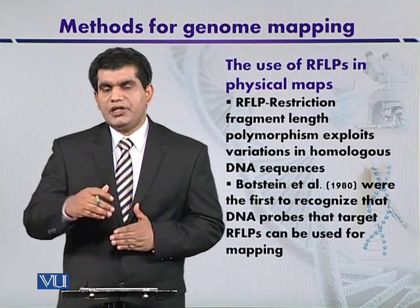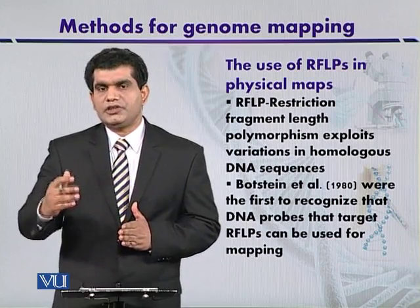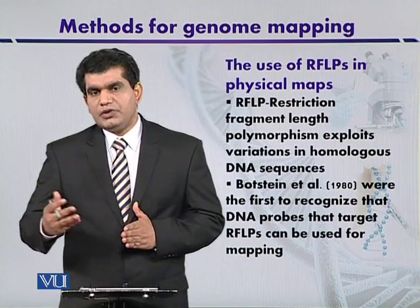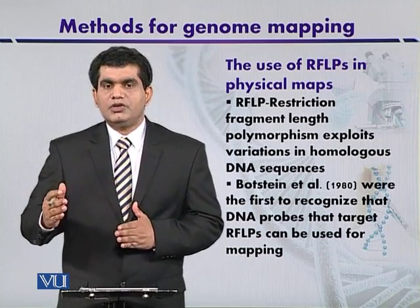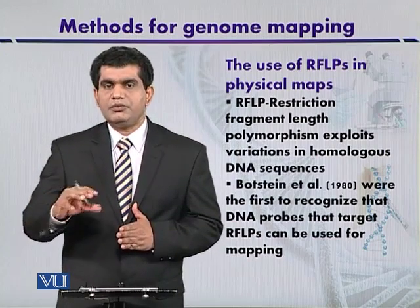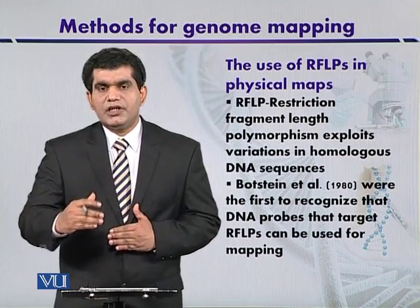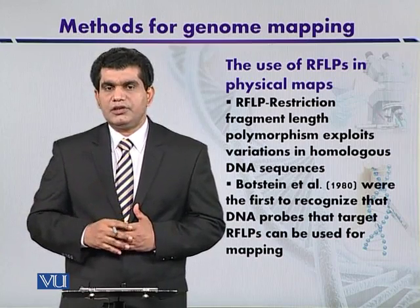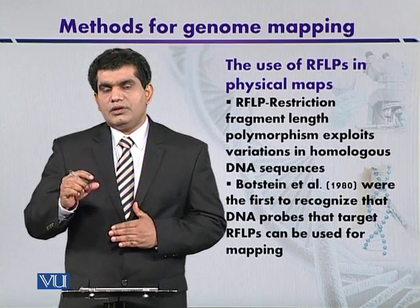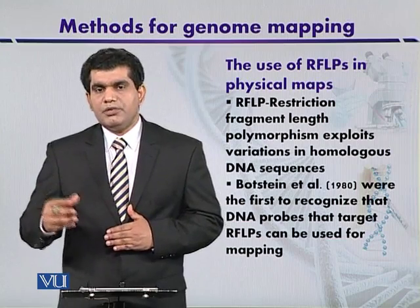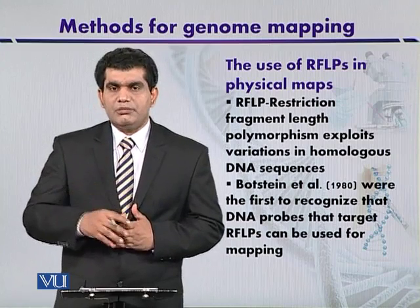Suppose individual one has their genomic DNA digested with a restriction enzyme — it will give a different pattern. Due to the 0.1% difference in the next individual's genome, using the same restriction enzyme will yield a different binding pattern. These differences can be resolved as fragments on gel electrophoresis.